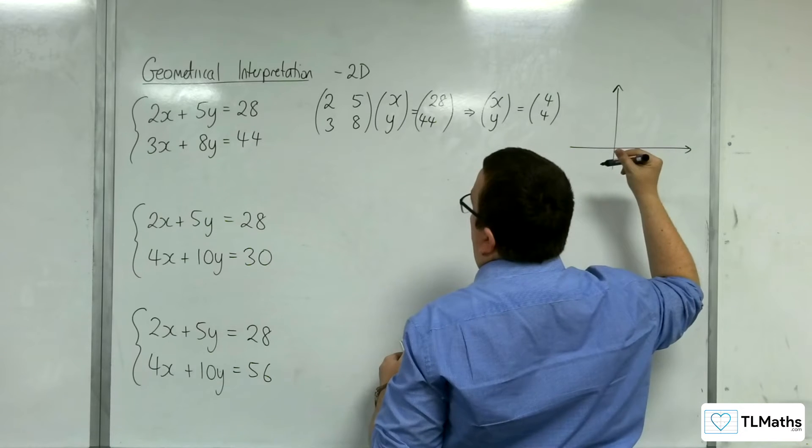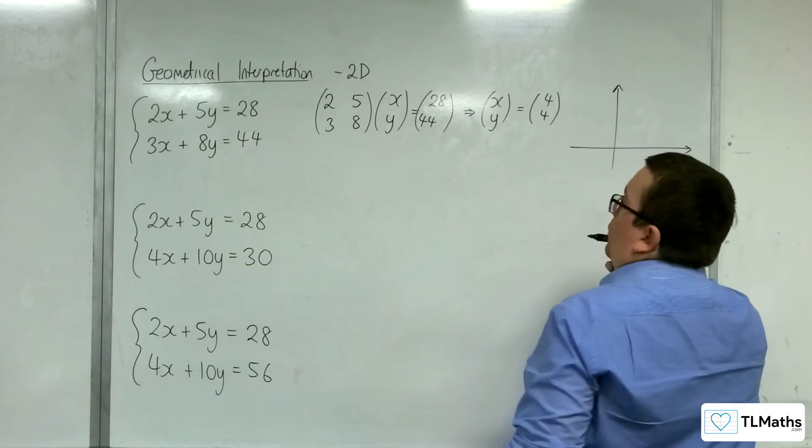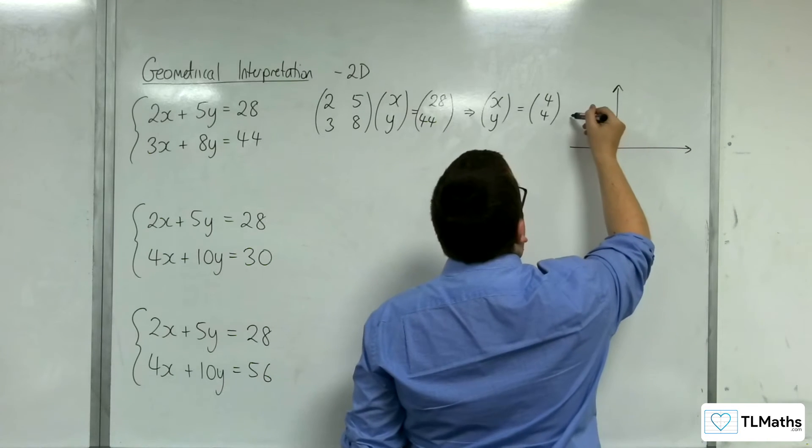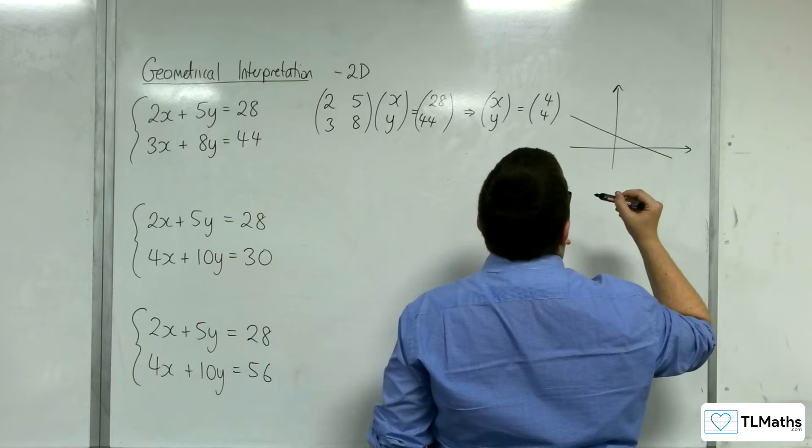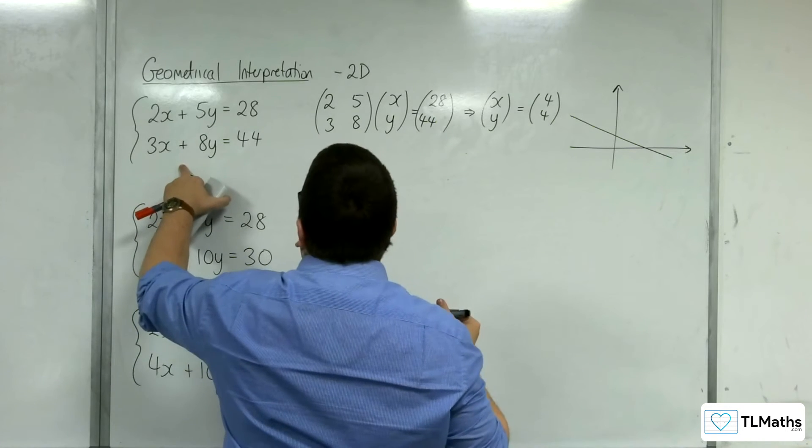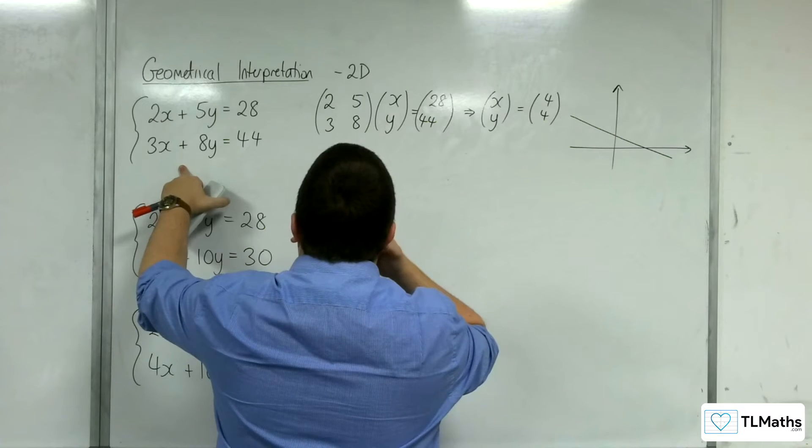we get x is 14. And when x is 0, we get 28 over 5. So something that looks something like that. That's our first line. And then our second line,